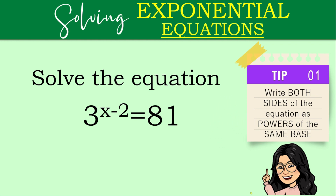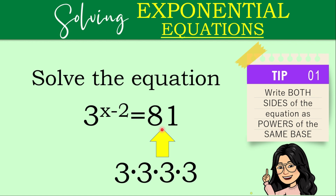Take note — same base. Looking at our given, you have 3 as your base on the left side, and on the right side you have 81. They don't have the same base yet, but we can express 81 with a base of 3, because 81 is 3 times 3 times 3 times 3 — that is 3 multiplied by itself 4 times. So we can write it as 3 raised to the power of 4.